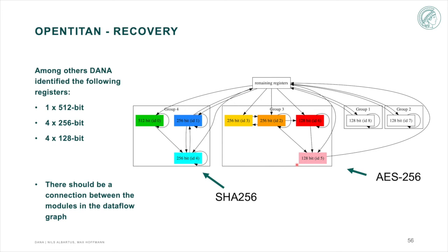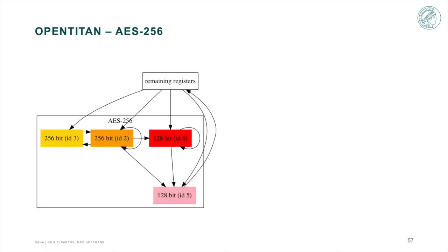Having a closer look at the suspected AES, DANA not only found two, but four registers in total that belong in this group. From merely studying the graph, it is possible to identify state and key register, not only by their size but also by their connection.